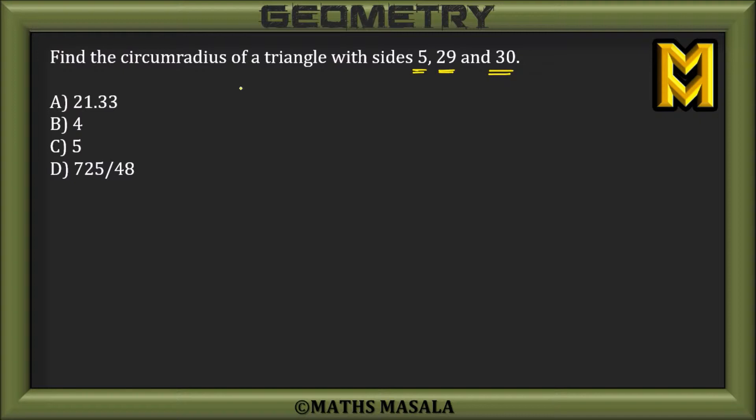doesn't seem to be a right angle triangle, so this would be a general triangle, something like this. Let's try to find the circumradius in general. Say this is length a, this is b, and this is c.